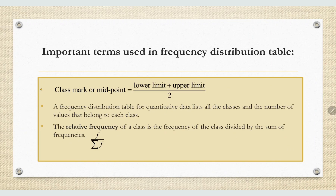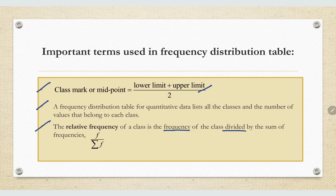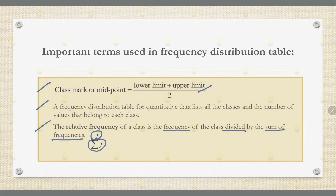Class mark or midpoint equals lower limit plus upper limit divided by 2. The Frequency Distributions table for quantitative data lists all the classes and the number of values that belong to each class. The relative frequency of a class is the frequency of the class divided by the sum of frequencies — f divided by summation of f.